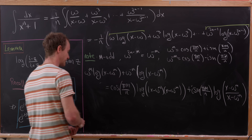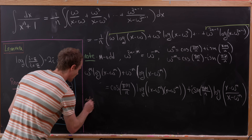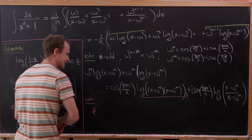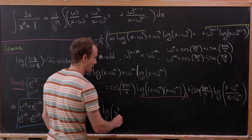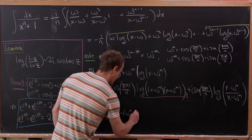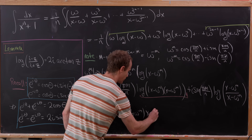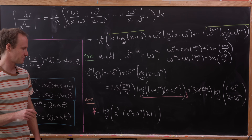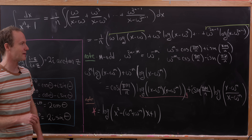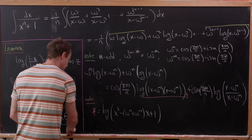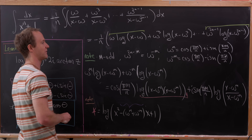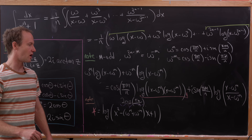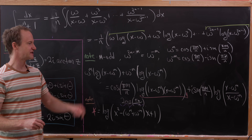Let's simplify the cosine part first. The product (x minus omega to the m)(x minus omega to the minus m) expands to x squared minus (omega to the m plus omega to the minus m) times x plus 1. But omega to the m plus omega to the minus m equals 2 cosine(pi·m/n). So the cosine contribution becomes cosine(pi·m/n) times the log of x squared minus 2·cosine(pi·m/n)·x plus 1, which is entirely in real numbers.